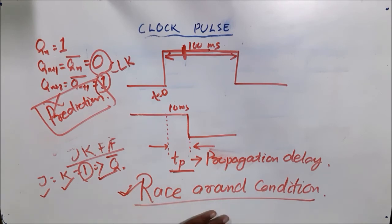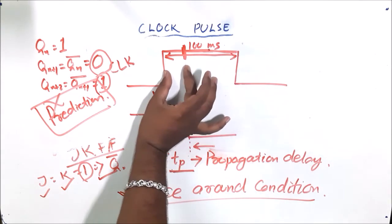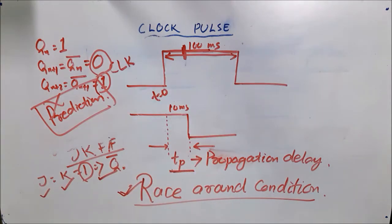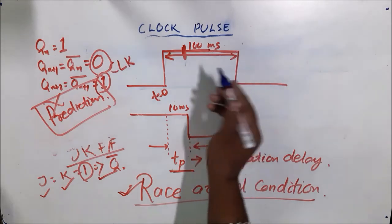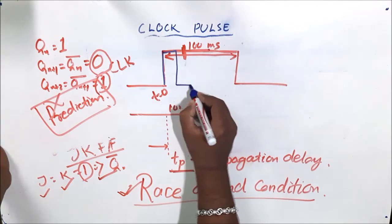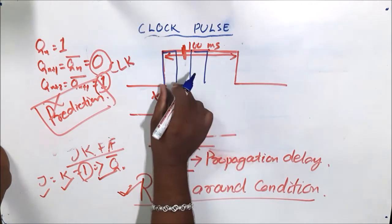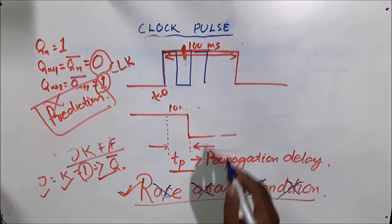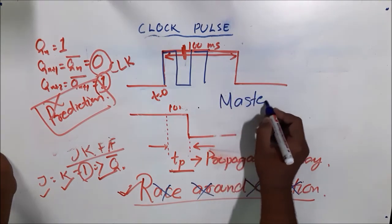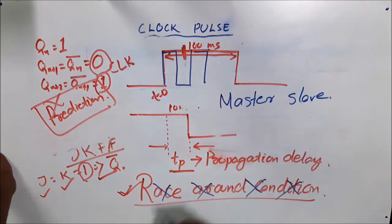To remove this race-around condition, we have to make the pulse width less than the propagation delay. If my pulse width is less than my propagation delay, then I can remove the race-around condition. There is another way also — if we use master-slave operation, then also race-around condition can be removed.